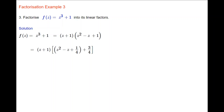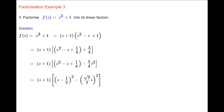Now we factorise the quadratic expression z squared minus z plus 1 by completing the square. The coefficient of z is minus 1; we halve it to get minus a half, and square it to get a quarter. We add a quarter to z squared minus z and subtract a quarter from the 1, leaving plus three quarters. Rewriting, we get z minus a half all squared minus three quarters i squared — the difference of two squares — which factorises to z minus a half minus root 3 over 2 times i, times z minus a half plus root 3 over 2 times i. So the full factorisation is z plus 1 times those two linear factors.